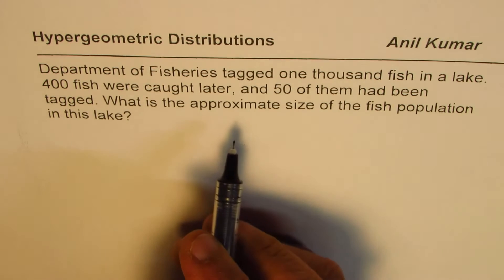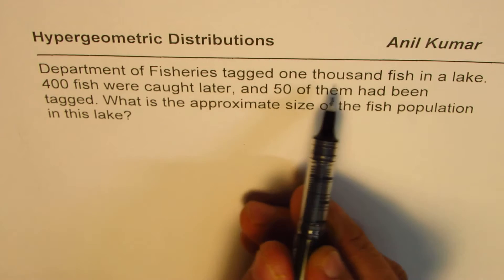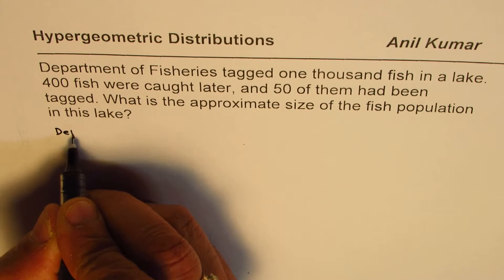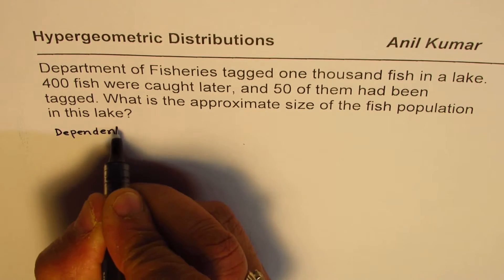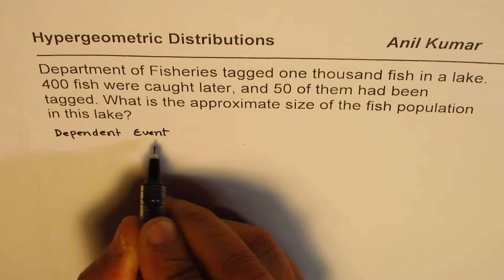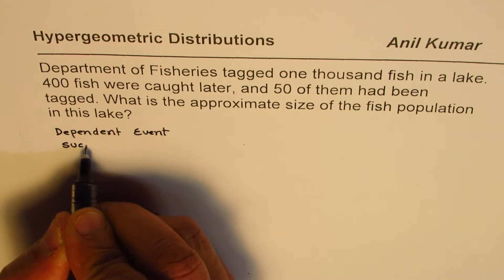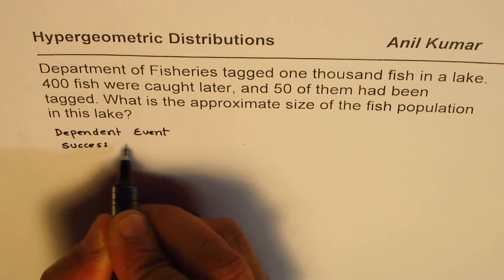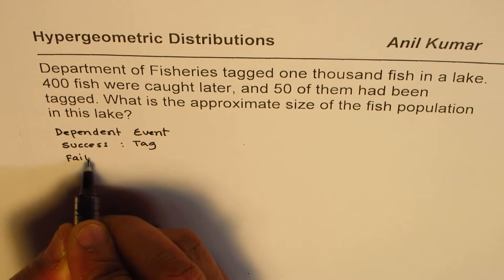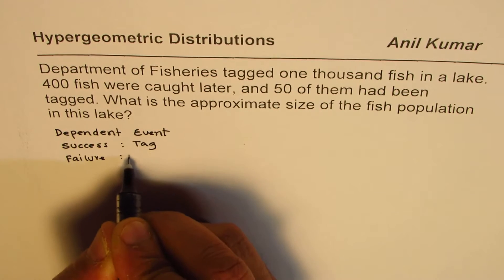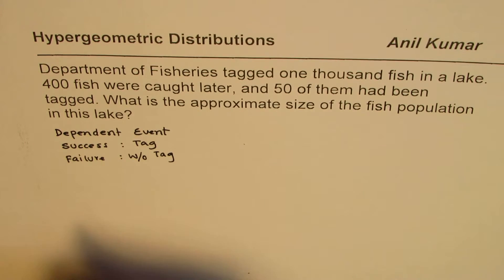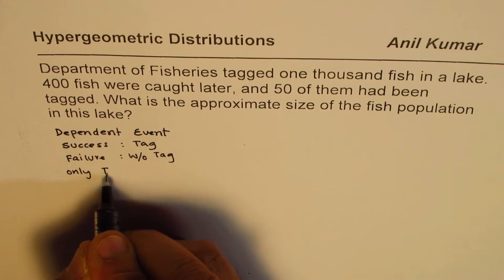Now in this particular case, we are tagging different fishes, so therefore it is a dependent event. In this dependent event, we will call success when you catch a fish which has a tag, and failure is without tag — without tag will be treated as a failure. So there are only two outcomes.